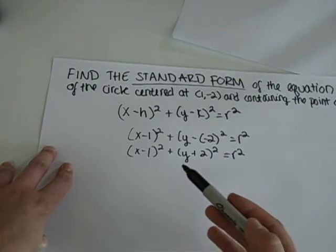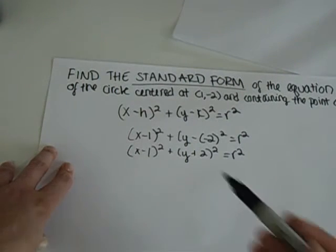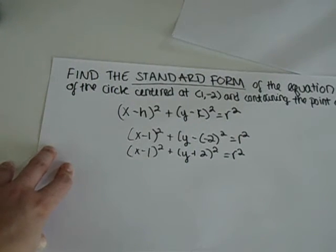So then if you take your containing points, which is (-5, 1), and plug it in, you should be able to find the radius.